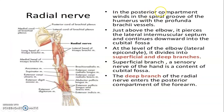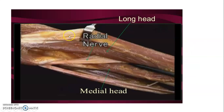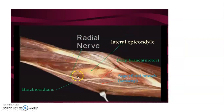The radial nerve (C5–T1) arises from the posterior cord of the brachial plexus. It enters the posterior compartment and winds in the spiral groove of the humerus together with the profunda brachii vessels. Just above the elbow it pierces the intermuscular septum and continues toward the cubital fossa. At the level of the elbow near the lateral epicondyle, it divides into a superficial branch (sensory to the dorsum of the hand, three and a half fingers) and a deep branch (entering the posterior compartment of the forearm).